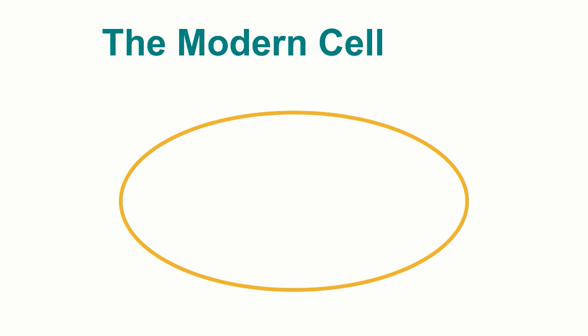All living organisms are made up of cells, and each cell is composed of a boundary made up of a phospholipid bilayer. Within each of these bilayer membranes is a genetic molecule, in this case DNA. DNA undergoes self-replication so that during cell division more copies of itself can be transmitted to daughter cells. This process is catalyzed by protein enzymes. DNA can also be transcribed into RNA, a messenger molecule. This process again is catalyzed through protein enzymes.